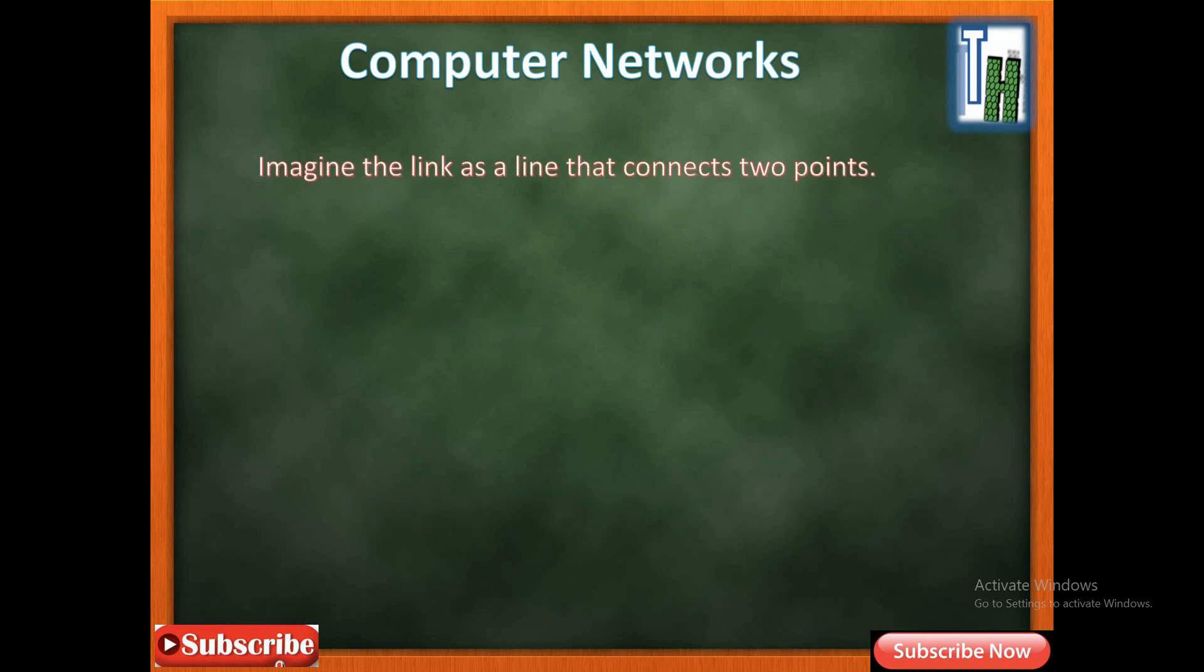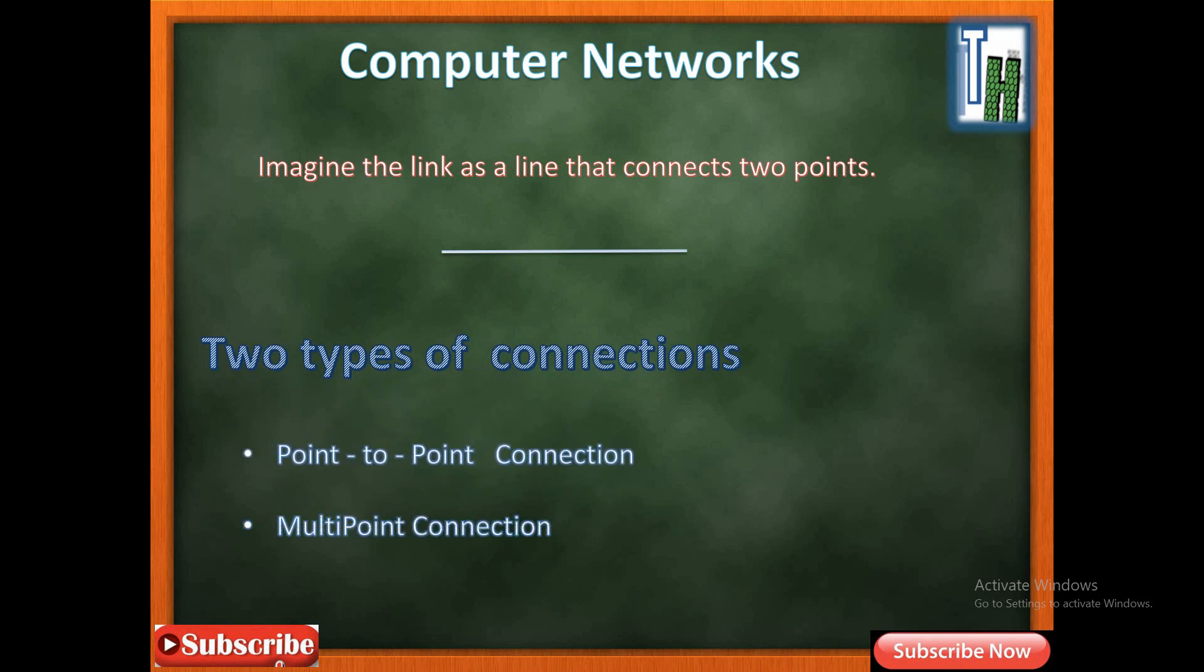Let's imagine the link as a line that connects two endpoints. In our scenario, these two endpoints are devices. So there are two types of connections: first one is point-to-point connection, and the second one is multipoint connection.